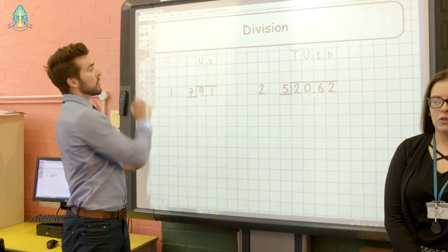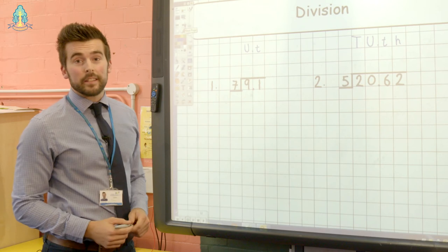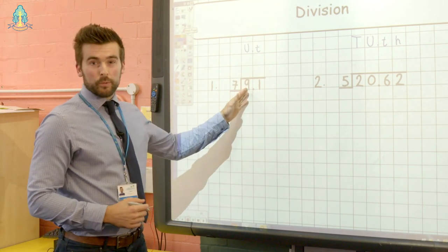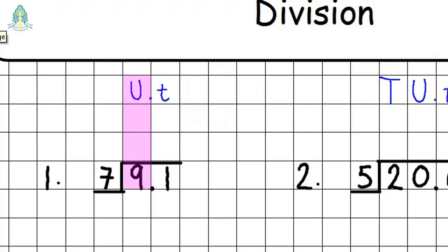We're going to look at division now, and we have two examples. Our first example: we look at our left hand column — this is different from our previous calculations. We start at the left hand column, and again I'm going to put my decimal point above in the answer box. Nine divided by seven gives us an answer of one remainder two. In this case it's two units, which is equivalent to twenty tenths. We carry this down to our tenths column and it now becomes twenty-one tenths. Twenty-one divided by seven gives us a final answer of one point three.